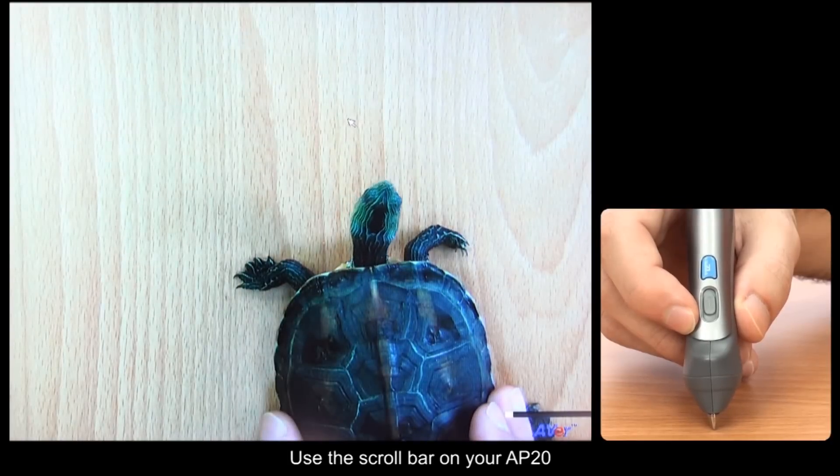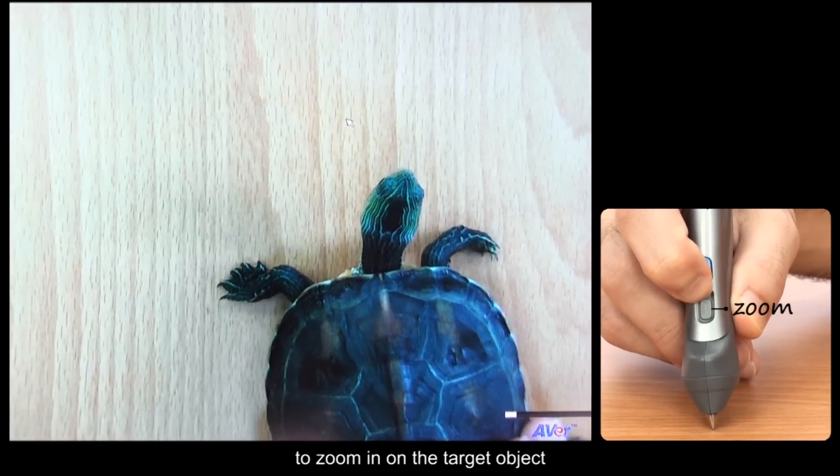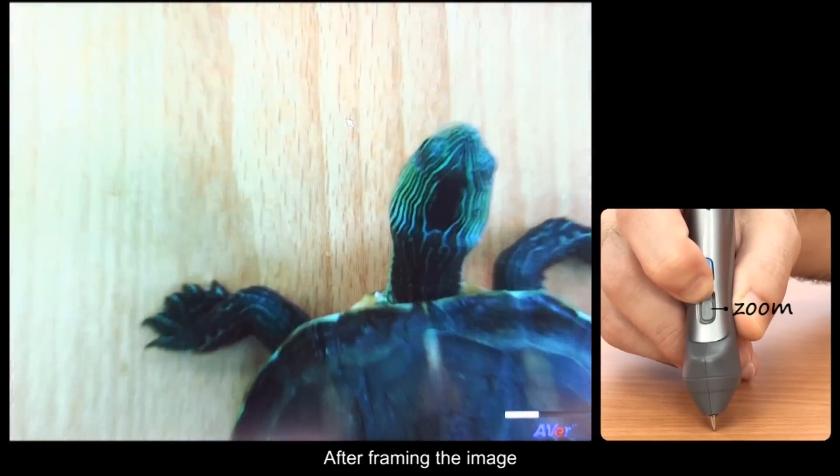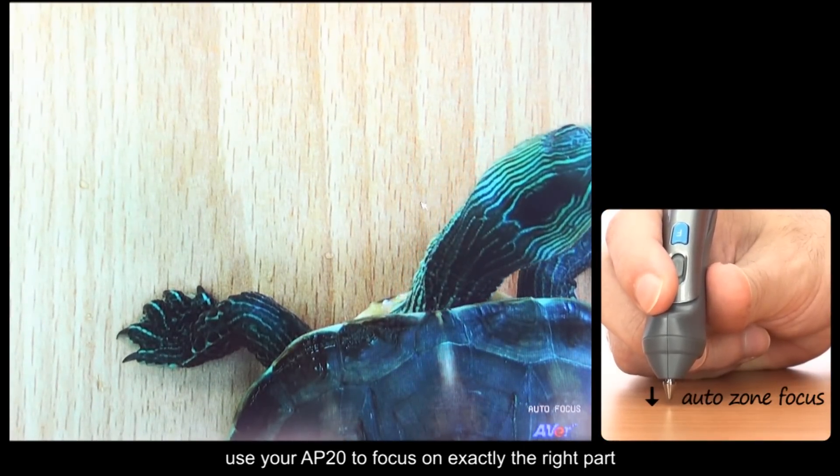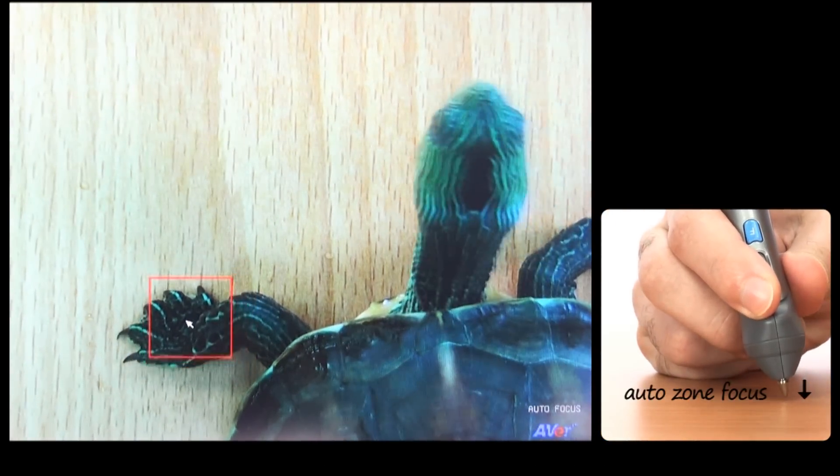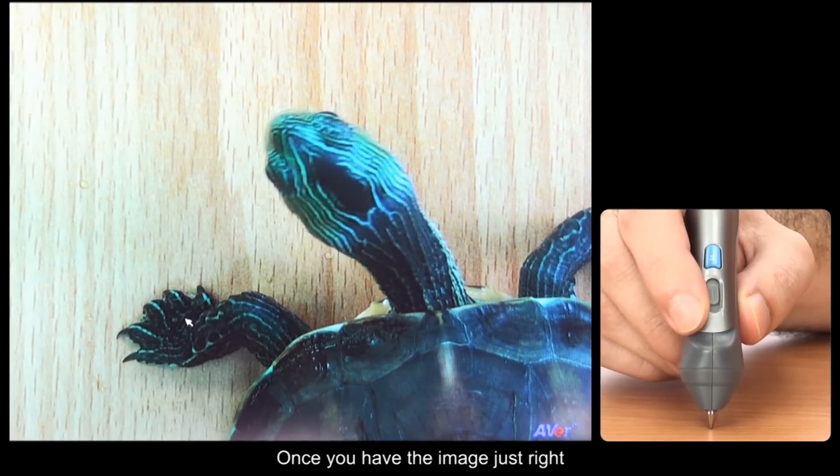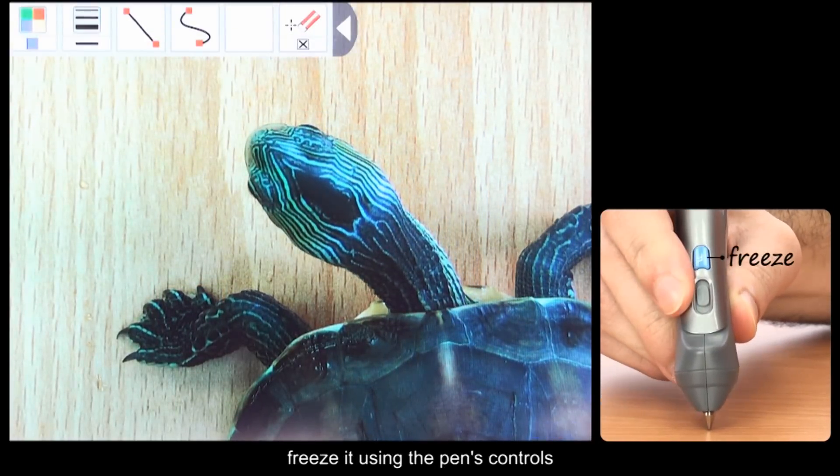Use the scroll bar on your AP20 to zoom in on the target object. After framing the image, use your AP20 to focus on exactly the right part of the live image. Once you have the image just right, freeze it using the pen's controls.